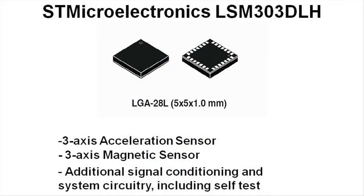An example of multi-sensor integration was recently introduced by ST Microelectronics. ST integrated a three-axis digital accelerometer with a three-axis digital magnetic sensor in a single module. The digital compass module targets applications in navigation and emerging smart location-based services. ST calls the design a system-in-package digital compass.